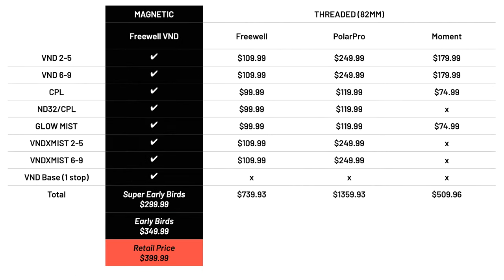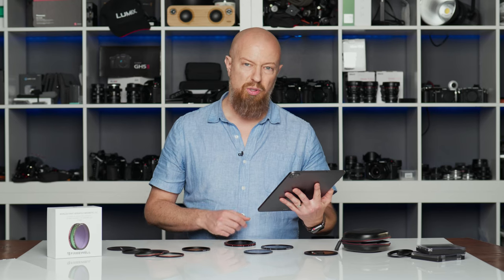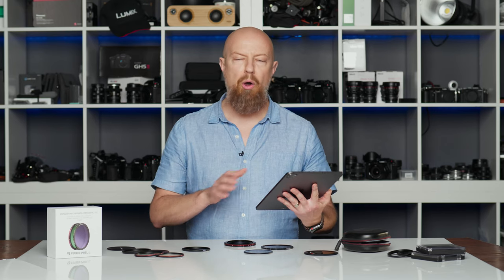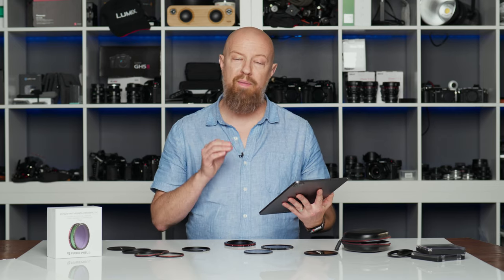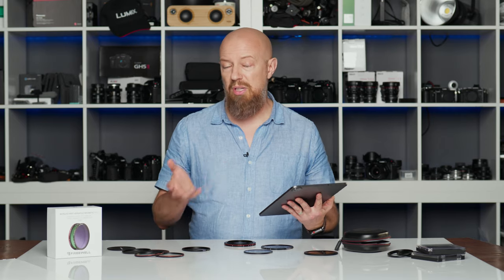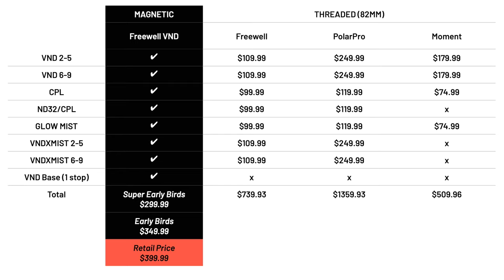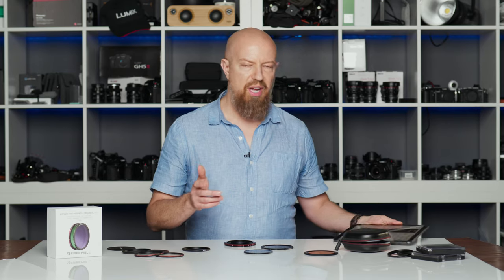If you jump over to Polar Pro lenses, that combination would bring you up to $1,360 — a pretty significant difference. I'm not comparing the two side by side; I can't tell you whether one is better than the other. I've never used the Polar Pro, but they come very highly regarded, and so do the Freewell filters. The other comparison is from Moment — you can actually spend less with Moment, however you can't get all the same pieces: you can't get the ND32 and CPL, and you don't get the mist filters.